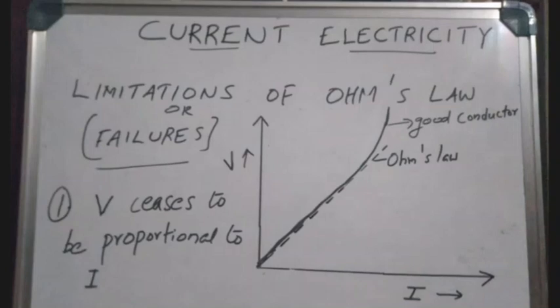Looking at the good conductor case on the graph, Ohm's Law is shown as a dashed line. The good conductor case is proportional. When V ceases to be proportional to I, this represents the limitations of Ohm's Law.